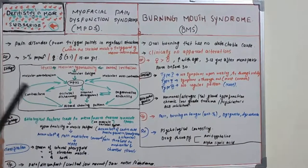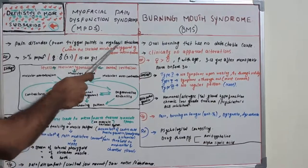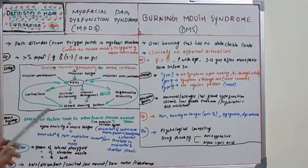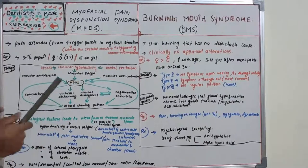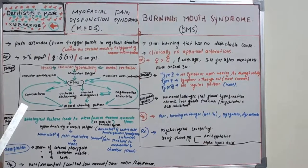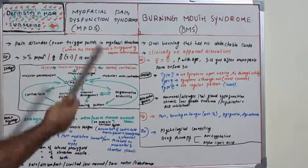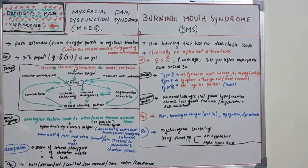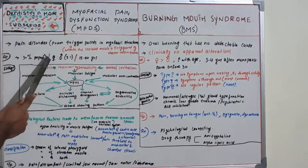Moving on to myofascial pain dysfunction syndrome (MPDS): it is a pain disorder that starts from trigger points in myofascial structures. These trigger points within skeletal muscle are triggered by macro or micro trauma to these skeletal structures. It affects 30% of the total population; females are most affected with a 3:1 predilection, and it is most commonly seen in the middle-age group of 15–40 years.